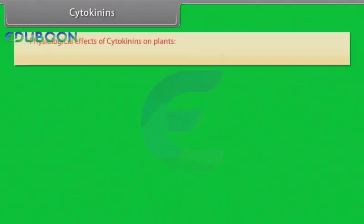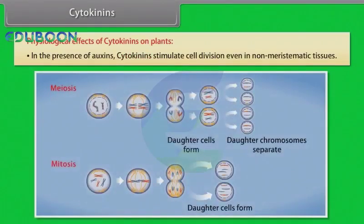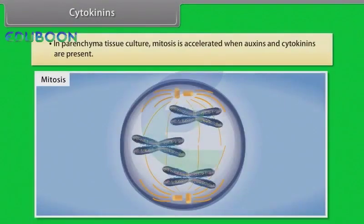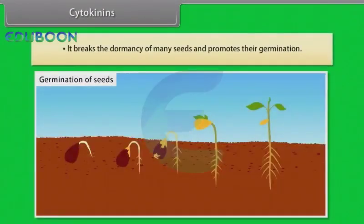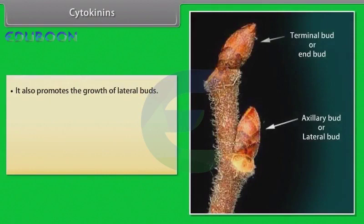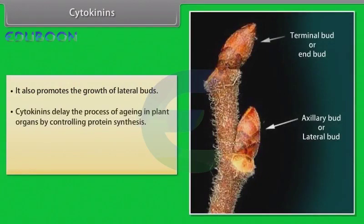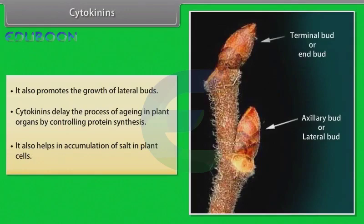Cytokinins — physiological effects on plants: In the presence of auxins, cytokinins stimulate cell division even in non-meristematic tissues. In parenchyma tissue culture, mitosis is accelerated when auxins and cytokinins are present. Cytokinins break the dormancy of many seeds and promote their germination. They also promote the growth of lateral buds. Cytokinins delay the process of aging in plant organs by controlling protein synthesis and help in accumulation of solutes in plant cells.